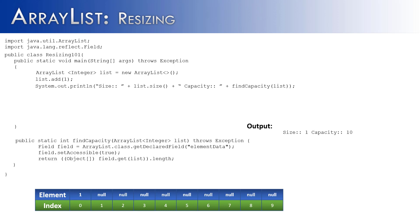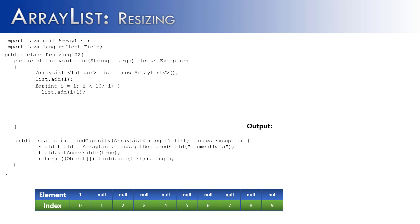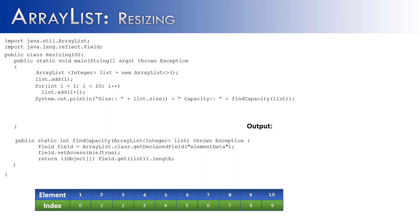Now that we're starting to see the difference between size and capacity, let's explore further in Resizing 102. We've created the ArrayList again, added one element, and then used a for loop to add elements to fill the rest of the ArrayList. Once that's done, we output size and capacity again, and we would get size is 10, capacity is 10 — we've reached maximum capacity.